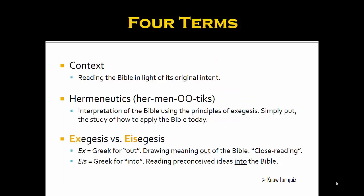Let us conclude this lesson with four terms and three tools. The first term is context — reading the Bible in light of its original context. The second term is hermeneutics, a Greek word meaning interpretation, used by scholars to refer to responsible biblical interpretation by applying the principles of exegesis. In Greek, 'ex' means out and 'eis' means into. We want to do exegesis — drawing meaning out of the Bible and letting it speak for itself. We do not want to do eisegesis, which is to read our own biased ideas into the Bible.